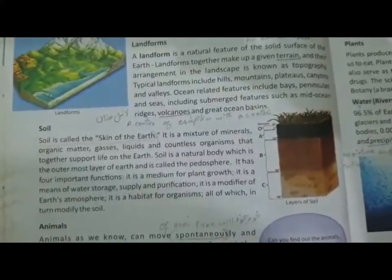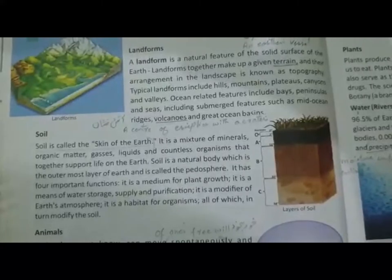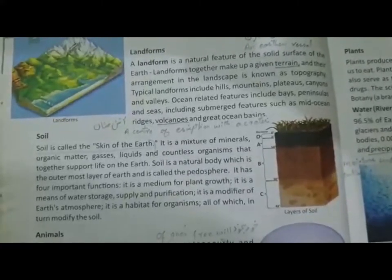Soil has four main functions. First, it helps plants to grow — we know plants grow in soil. Second, soil is a means of water storage, supply, and purification — the clean drinking water that comes from underground is stored and purified by soil. Third, soil is the modifier of the earth's atmosphere, helping to purify it. Fourth, soil is the habitat for organisms — many animals, microorganisms, and small insects live in soil as their home.